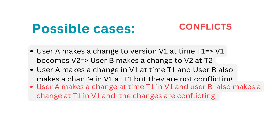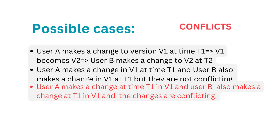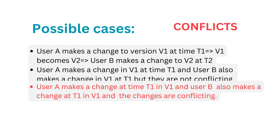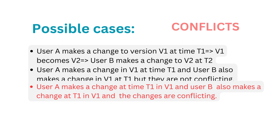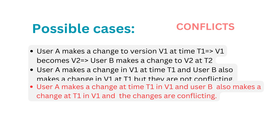There are possible scenarios that can occur. First: user A makes a change to version V1 at time T1 making it V2, then user B makes a change to V2 at time T2 — the events are sequential, so there's no conflict. Second: user A and user B both make changes to version V1 at the same time T1, but to different elements or different lines — these changes are non-conflicting, so again nothing special to handle.